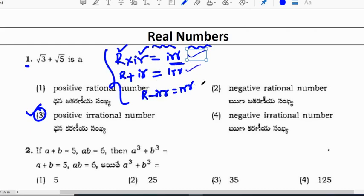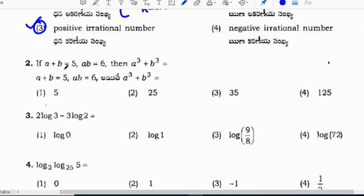The difference of a rational and irrational number is also irrational. Next question: if a plus b is equal to 5 and ab is equal to 6, then find a cube plus b cube.